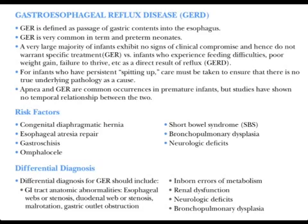The differential diagnosis for GERD should include GI tract anatomic abnormalities such as esophageal webs or stenosis, malformation, malrotation, gastric outlet obstruction, inborn errors of metabolism, renal dysfunction, neurological deficits, and bronchopulmonary dysplasia.